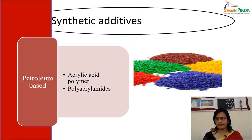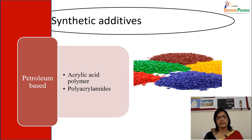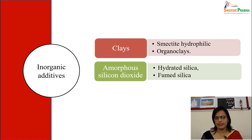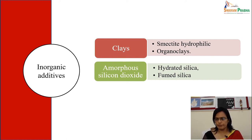Synthetic additives are produced by chemical reactions. Petroleum-based examples include acrylic acid polymers and polyacrylates. Inorganic additives include clays and amorphous silicon dioxide, with examples such as organoclays, hydrated silica, and fumed silica.